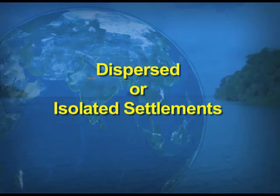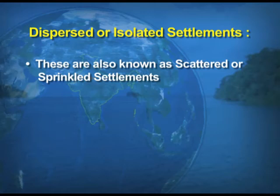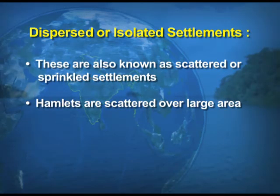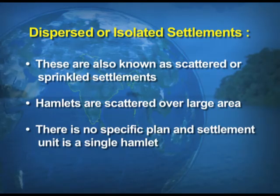Number four: dispersed or isolated settlements are known as scattered or sprinkled settlements. Hamlets are scattered over large areas with no specific plan — the settlement unit is a single hamlet. There is hardly any defined layout plan such as linear, rectangular, or star shapes. Lastly, these settlements are found in the form of isolated huts.